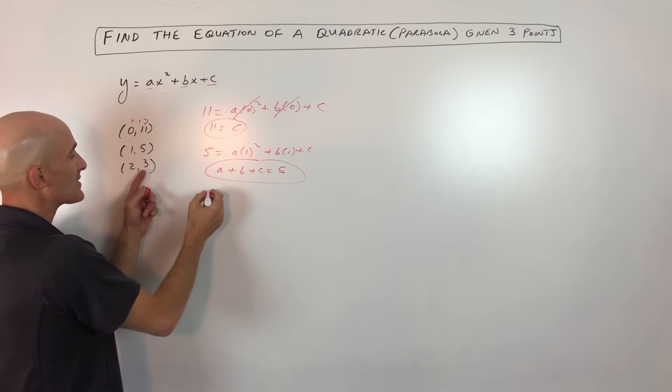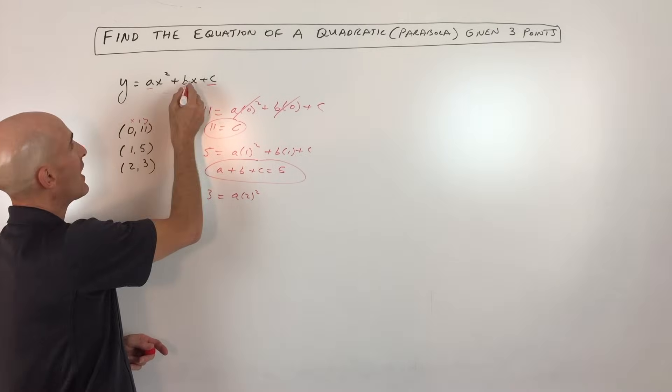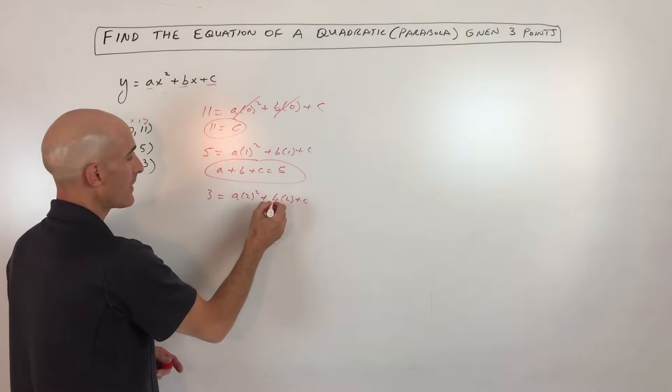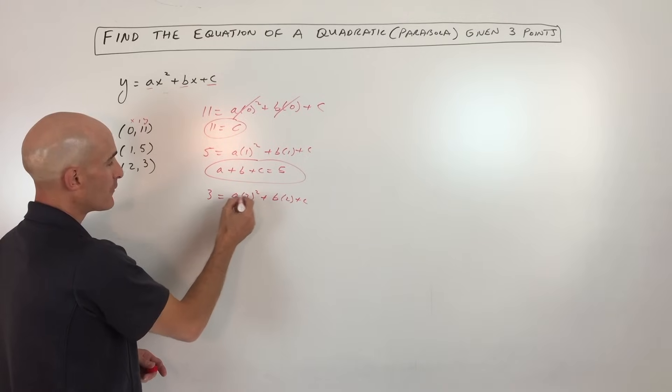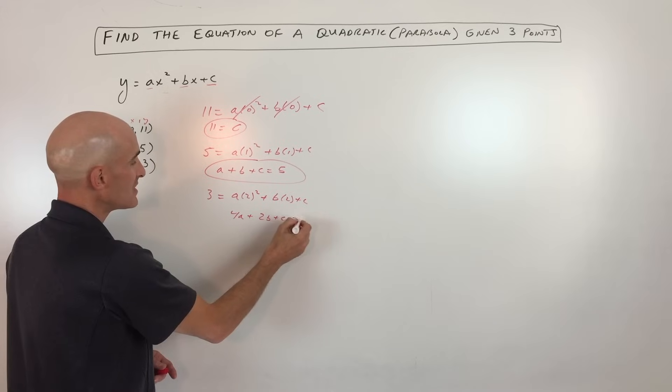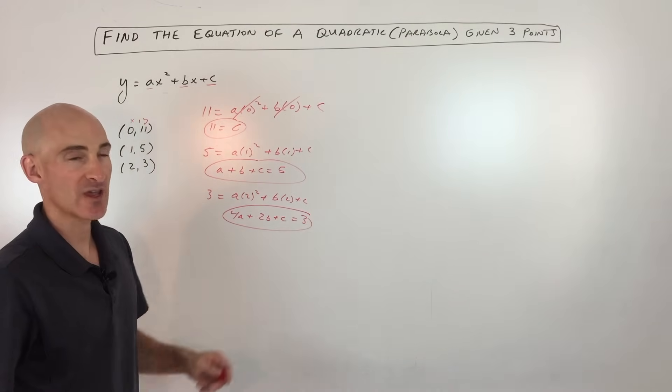And then the last one, when y is 3, x is 2. So we're putting 2 in for x, so that's 2 squared plus b times 2 plus c. And if we simplify this down, we get 4 times a plus 2 times b plus c equals 3. I just flipped the equation to put the number on the right side. So you're with me so far?